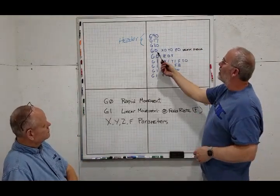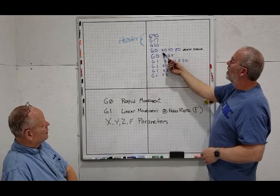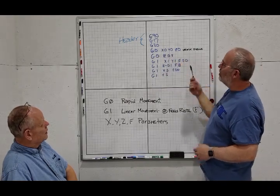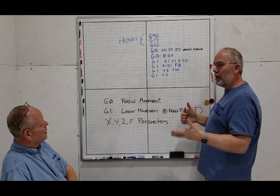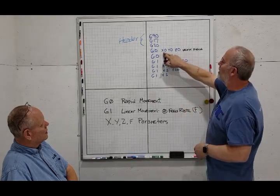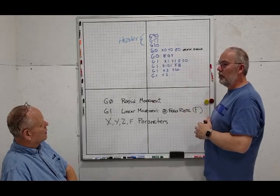So from there, I'd only put a G-0, which is our rapid movement to go ahead and do to know where my machine's at, right? So I'm saying X0, Y0, Z0. That's where I want you to move if you're not.